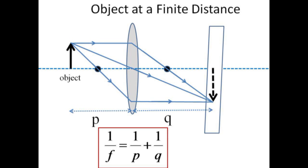The equation relating the object distance to the image distance is that the inverse of f equals the inverse of p plus the inverse of q.